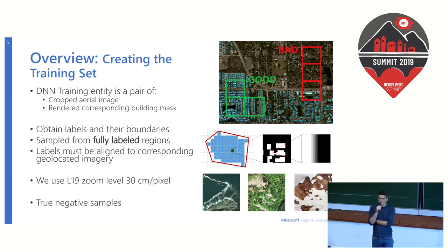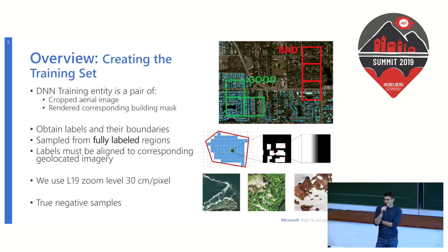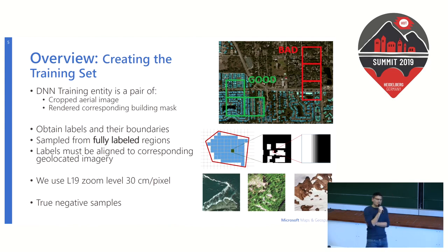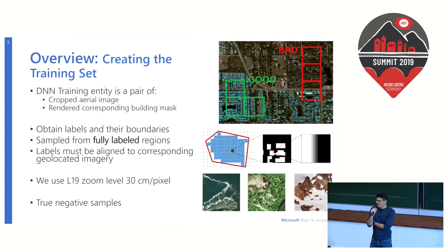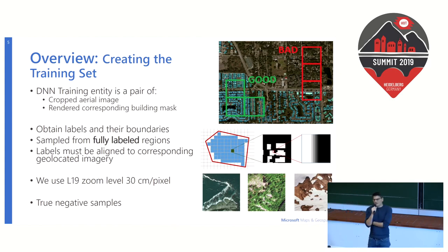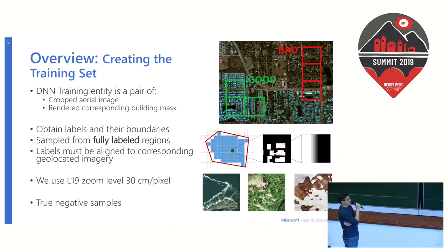We use supervised training mechanisms where we show the network positive examples, and the deep neural network statistically tries to replicate that behavior. The training entity for the network is a pair: an image and a binary mask showing where the buildings are. It's not enough to only have great labels — you also need regions that are fully labeled. Ideally, besides labels you have an area of interest from which you can sample cropped images and feed them into the network.